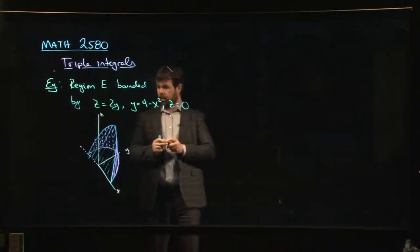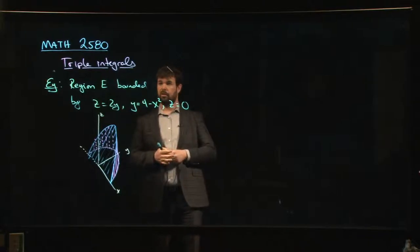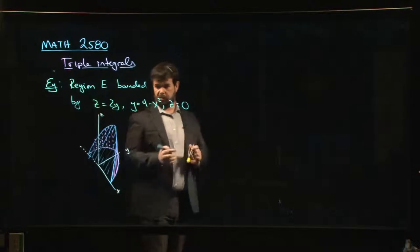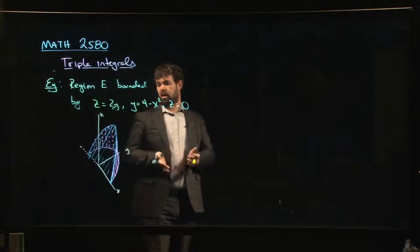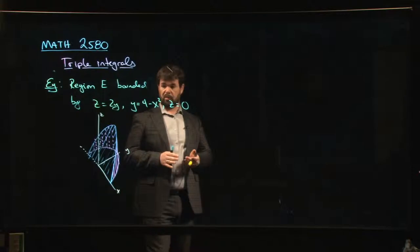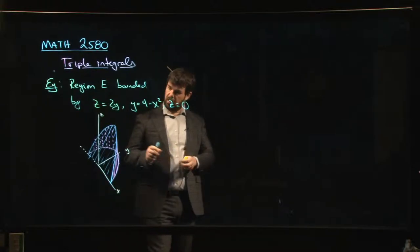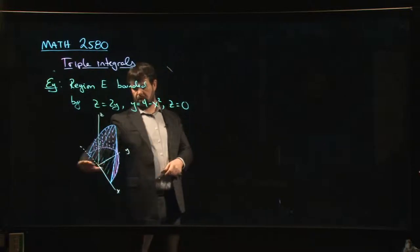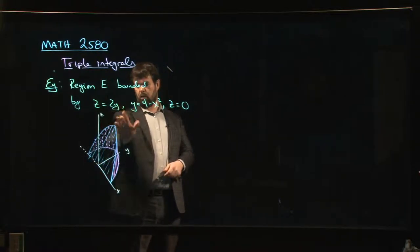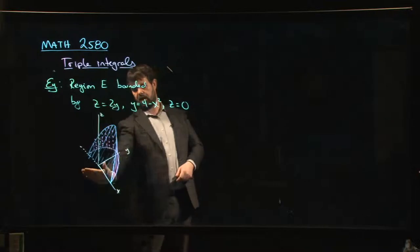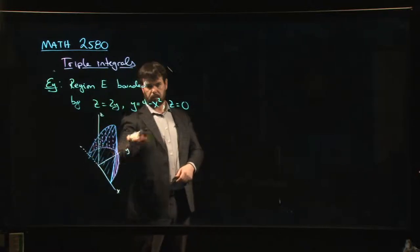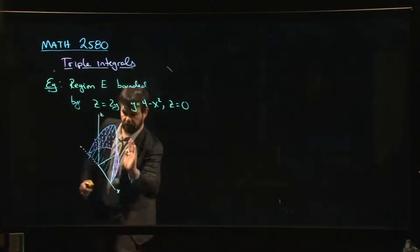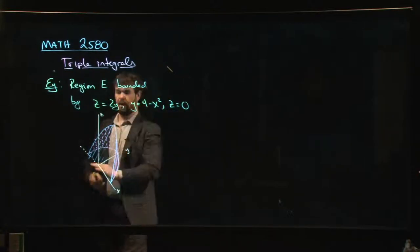All right, so we're going to do one more example here with trying to set up triple integrals in rectangular coordinates where we're given some surfaces which bound the region and we want to figure out how to set up the integral and possibly set it up in different orders. So the surfaces that we have here, z equals 0, so the yz plane, z equals 2y, also a plane, it's this plane coming in at an angle like so, and y equals 4 minus x squared, that's a parabolic cylinder, so it's this cylinder that wraps around the back.